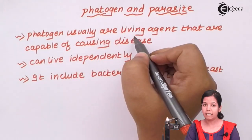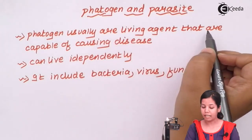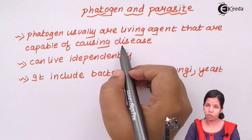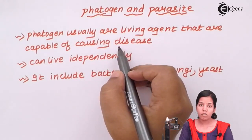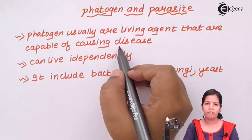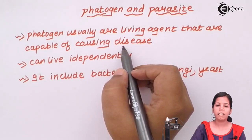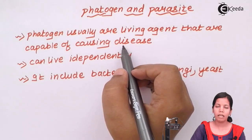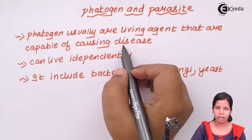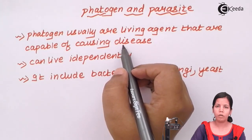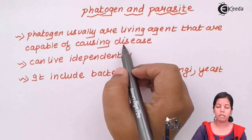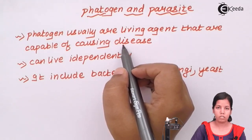Pathogens are basically living agents that are capable of causing disease. It's not necessary that every pathogen present will cause a disease. For example, the E. coli that lives in your stomach is a gut-friendly E. coli that will not cause disease. But if its population grows beyond a certain level, then it can cause a disease.